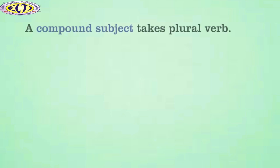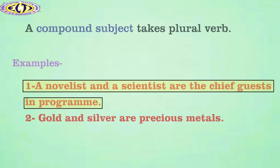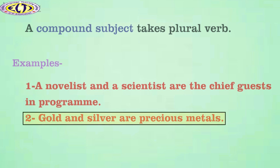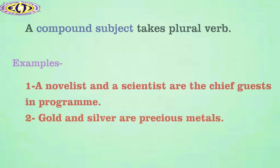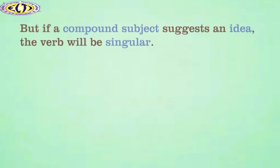Let us proceed to the next important point. A compound subject takes plural verb. For example, a novelist and a scientist are the chief guests in the program. Here, we can see that the subjects that are compounds take plural verb.